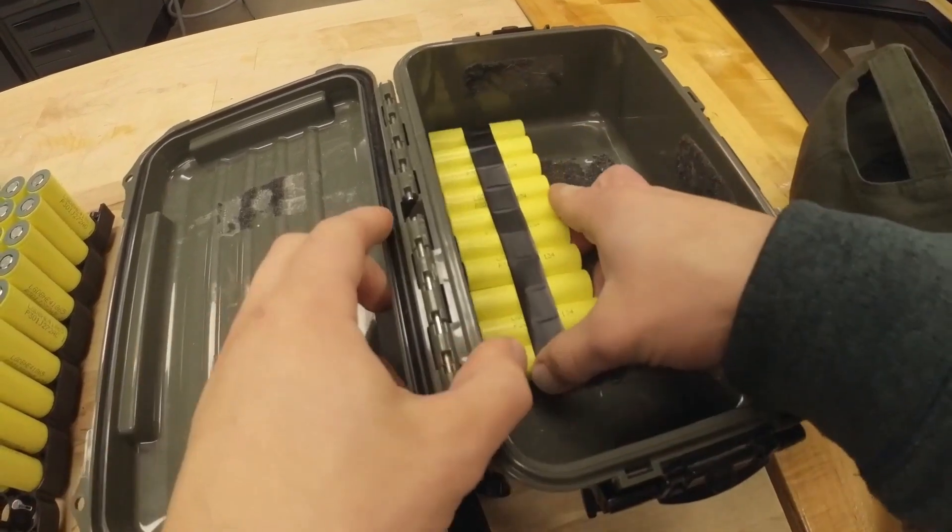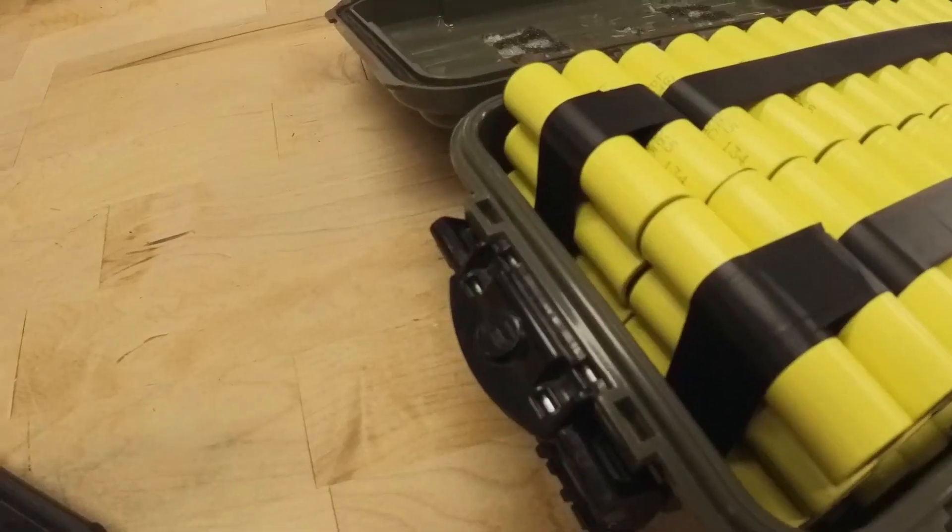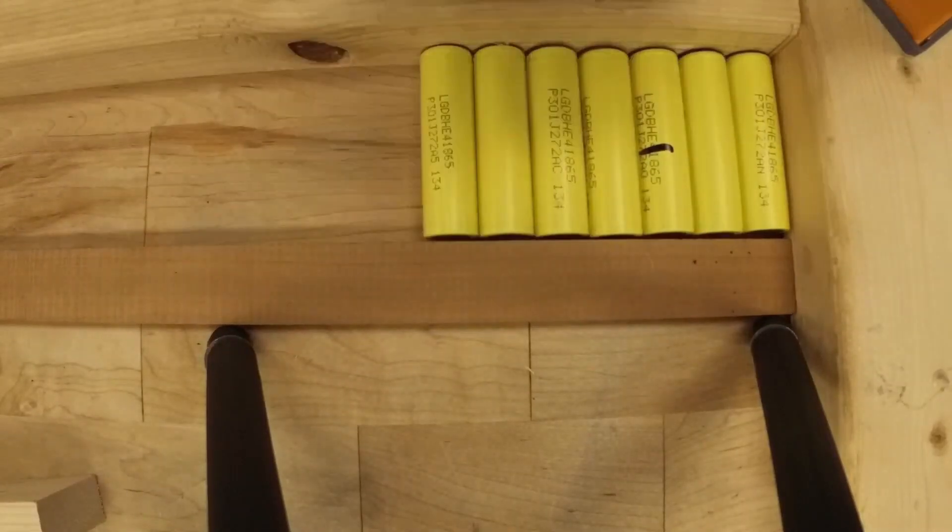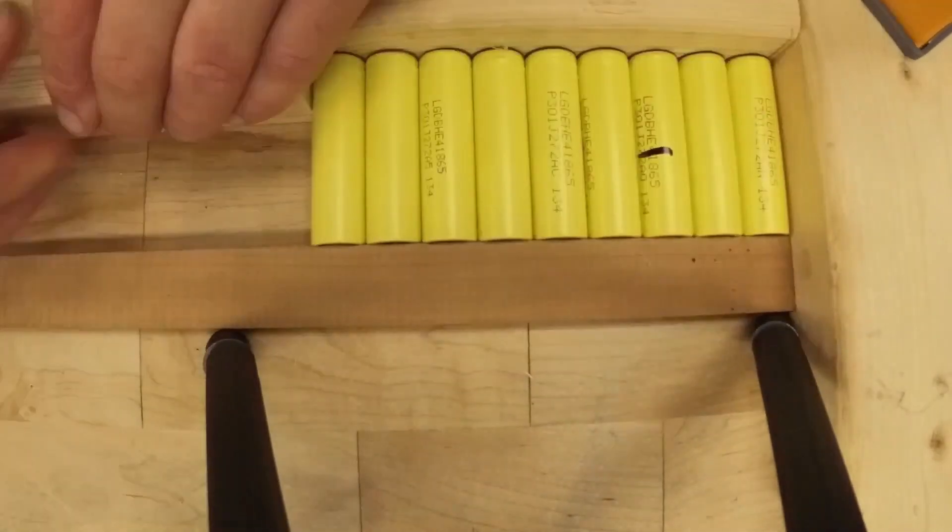This led to the final result being a 12S 9P 20Ah pack. From there I moved on to gluing the cells to hold them together while welding and to reduce movement in the finished product.